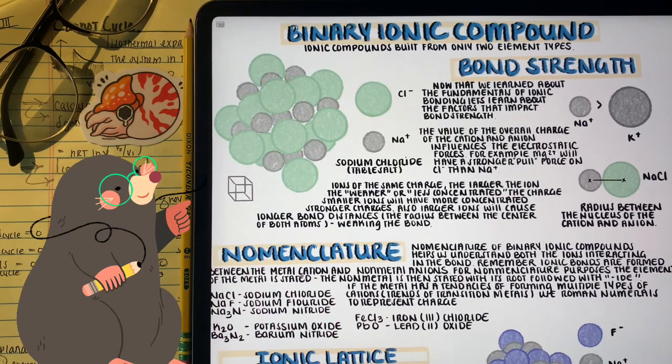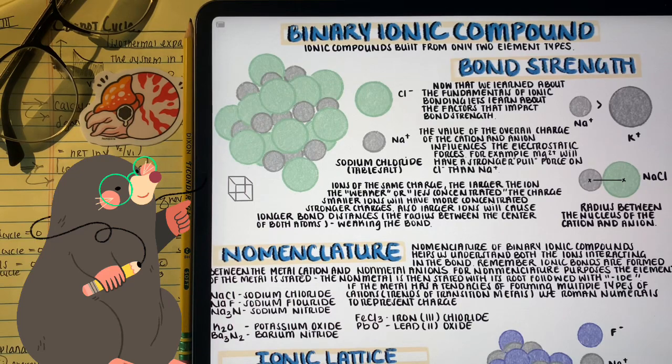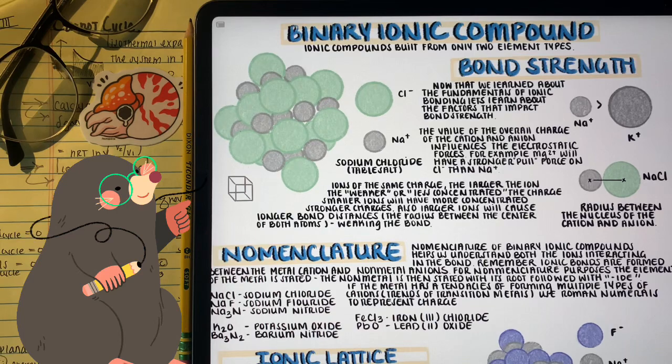This is what table salt is. Table salt is the lattice structure of the repeating ionic bonds between sodium and chlorine, and it's an ionic bond.